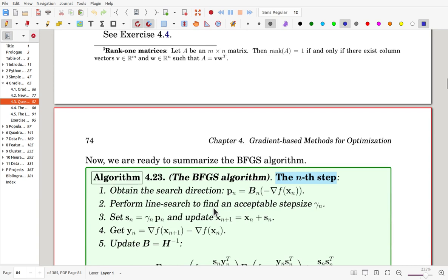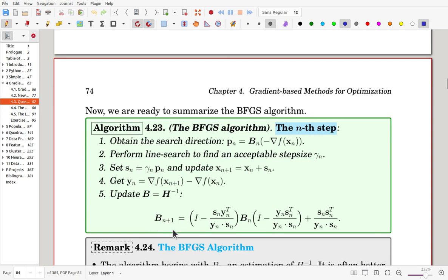Now we are ready to summarize the BFGS algorithm. At the nth step, first we obtain the search direction pn, that is now minus gradient times Bn, which is inverse of Hn. Now try to get gamma_n through line search, and we define here Sn is gamma_n pn. Now xn is updated using Sn. Now we compute yn, and here we update B. So Bn+1 is, by using the formula, we can update Bn+1.